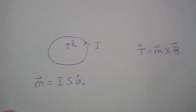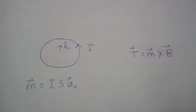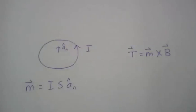Now, if we put this current loop in a magnetic field, it will experience a torque, and that torque is given by the cross-product of the magnetic dipole moment and the magnetic flux density.